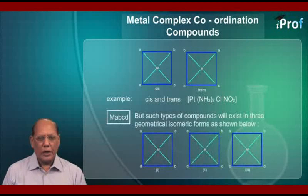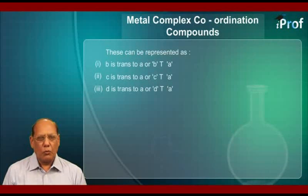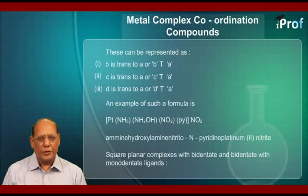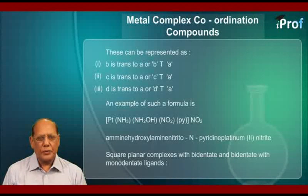Finally, MABCD. Such compounds will exist in three geometrical isomeric forms, as shown. These can be represented as: number one, B is trans to A, or BTA; number two, C is trans to A, or CTA; and number three, D is trans to A, or DTA. An example of such a formula is [Pt(NH3)(NH2OH)(NO2)(Py)]NO2.